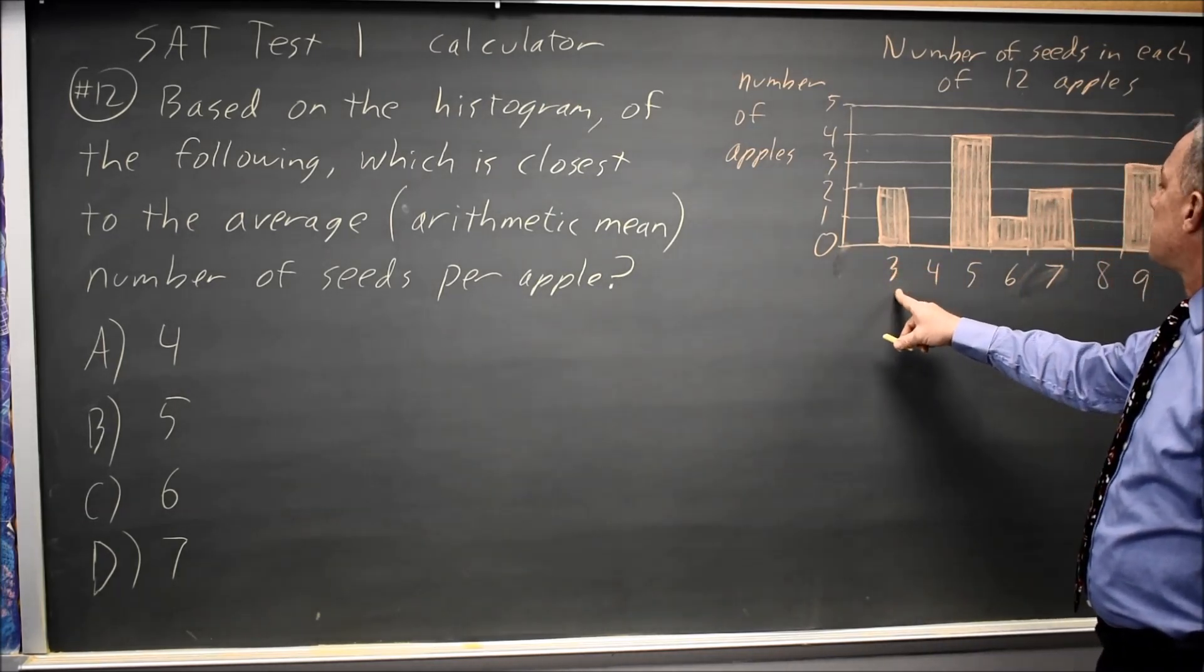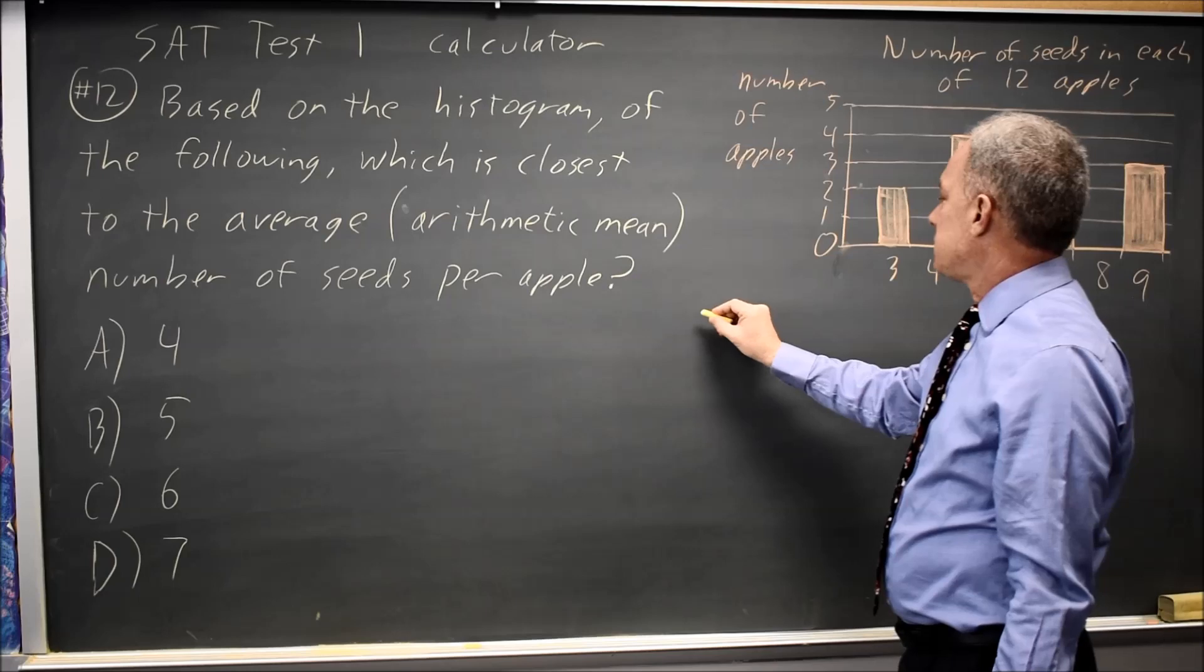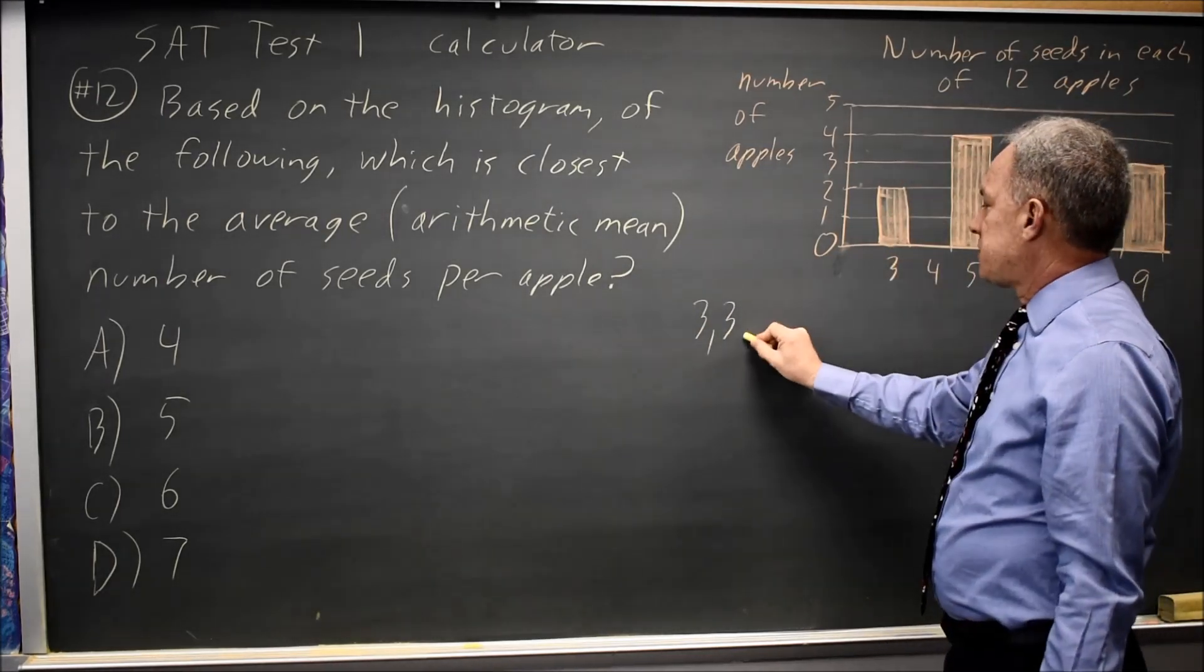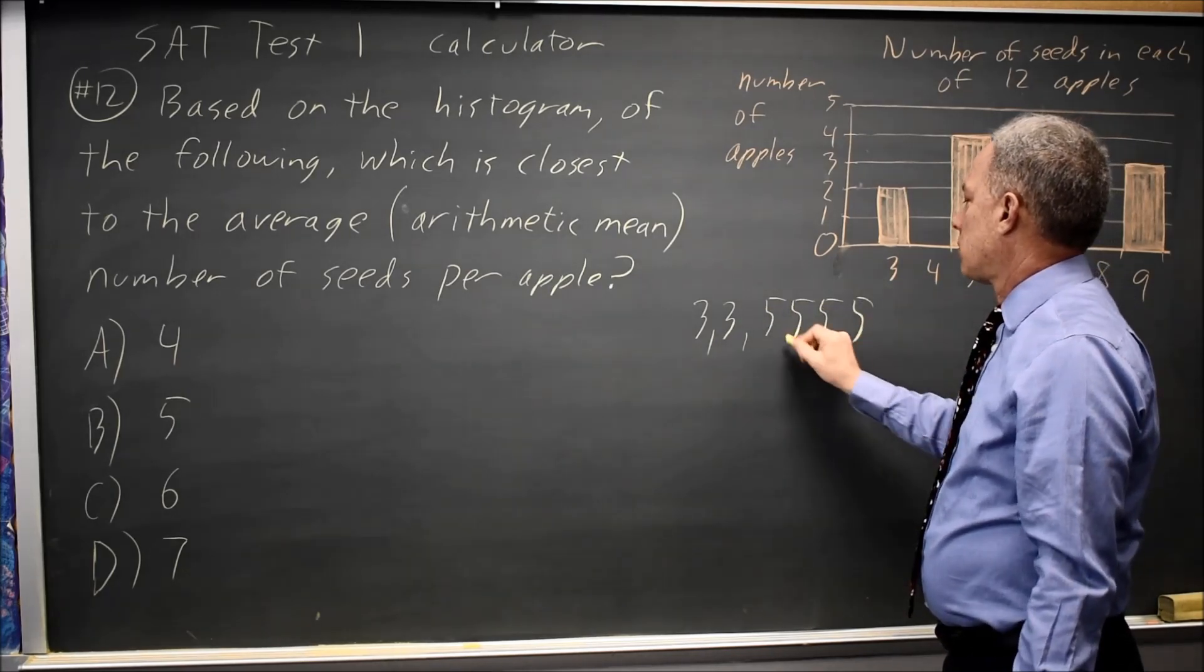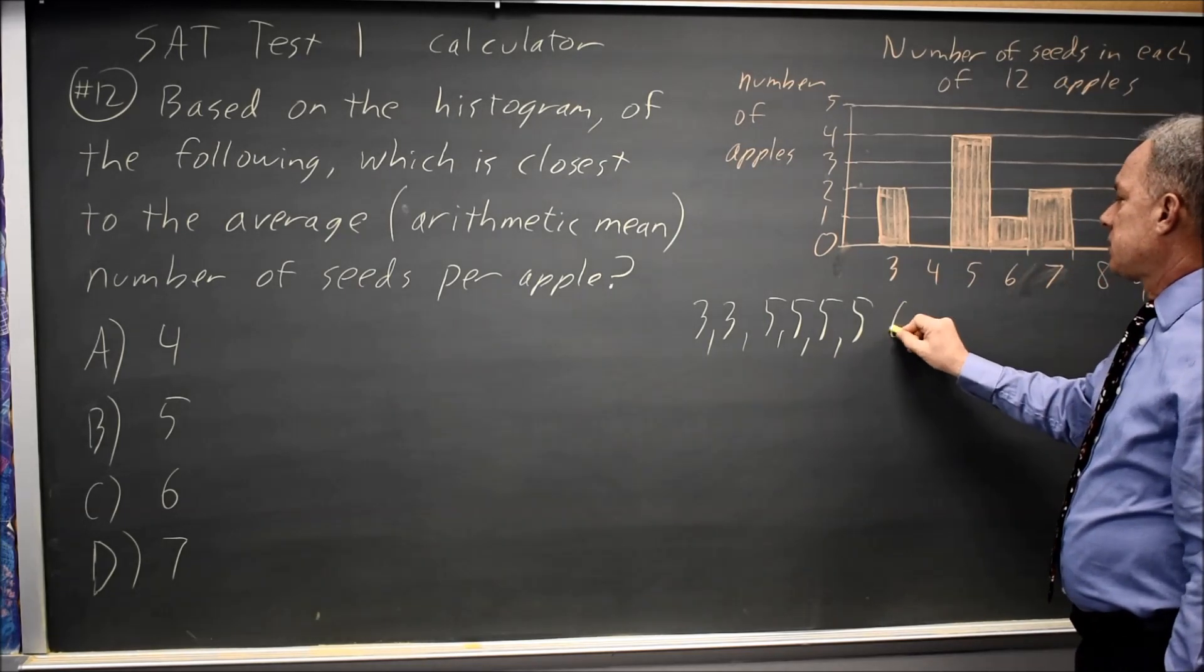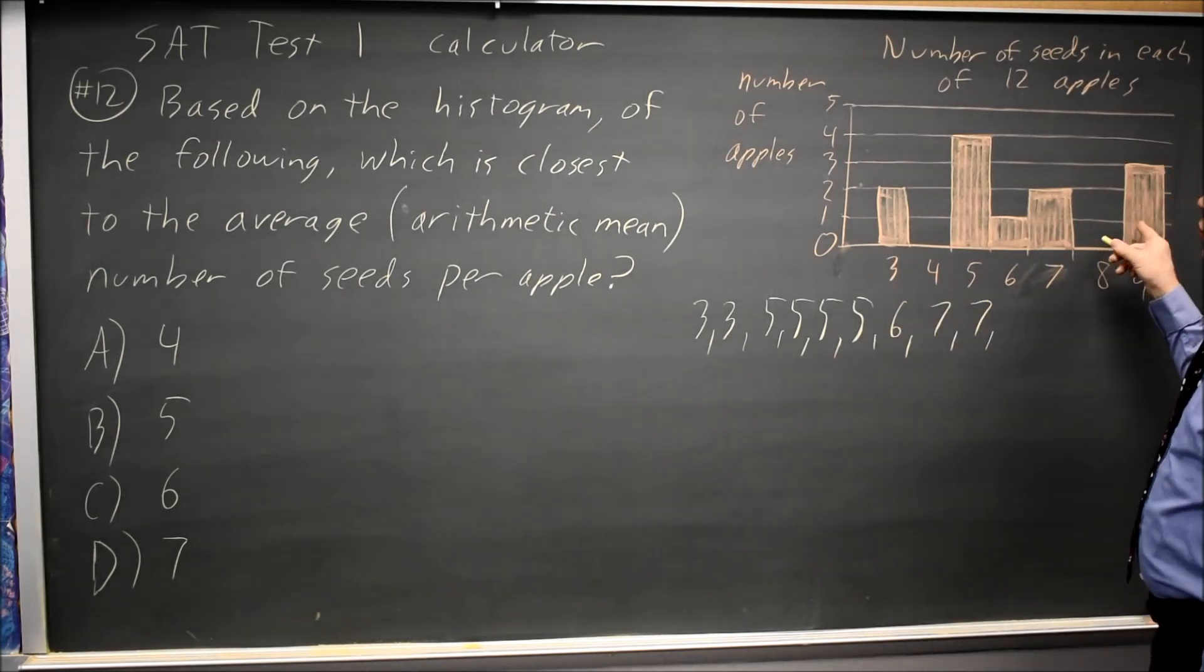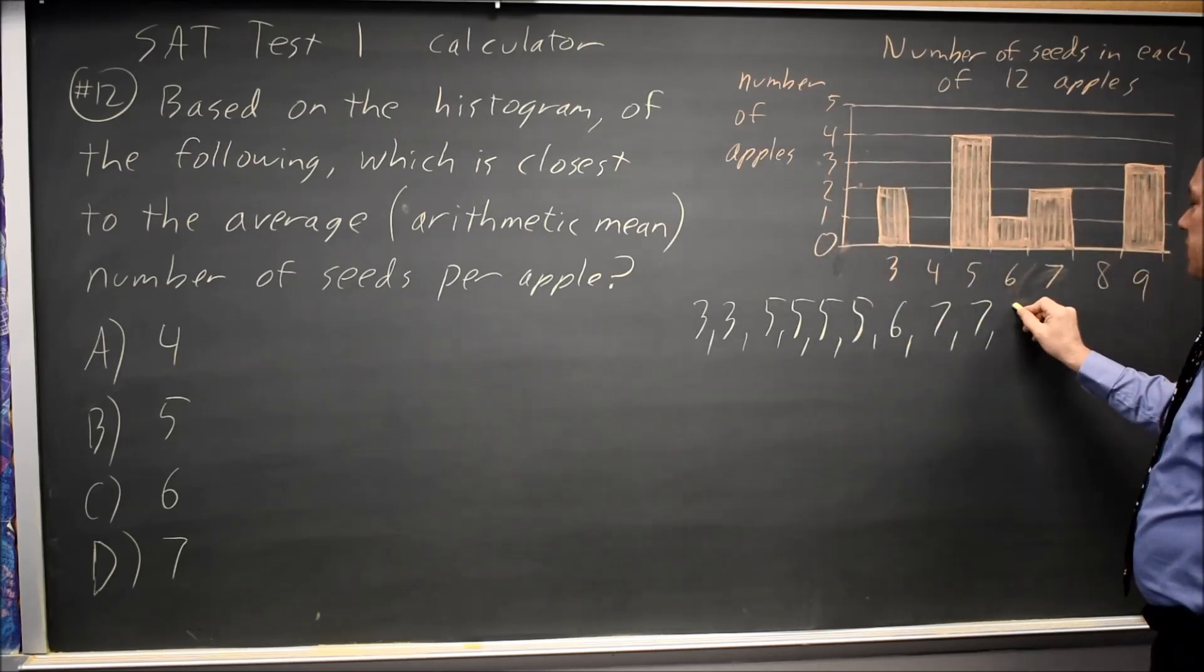In the histogram, they show that there are two apples with three seeds each, four apples with five seeds each, one apple with six, two apples with seven, and the number of apples, three, is how many apples have nine.